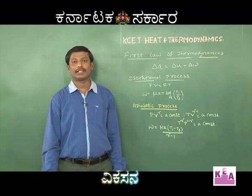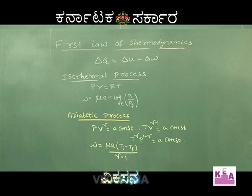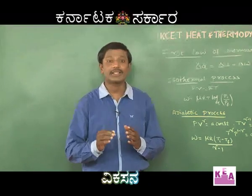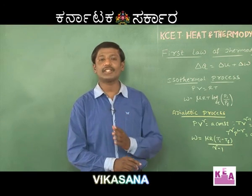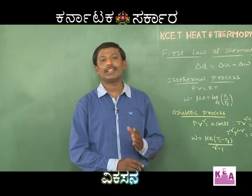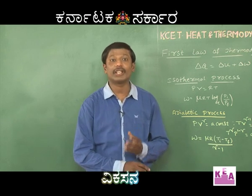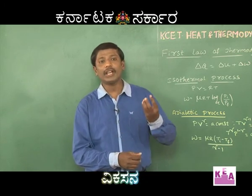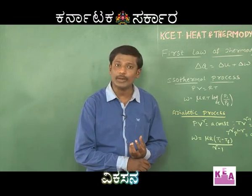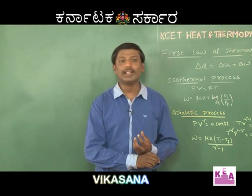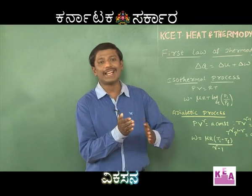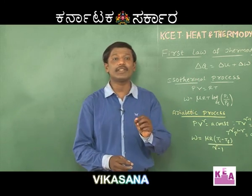The next concept is the first law of thermodynamics. It states that the amount of energy supplied to a system is utilized for two purposes: part of the heat energy is used to increase internal energy, and the rest is used for external work done. Mathematically, delta Q equals delta U plus delta W. This proves the conservation of energy.